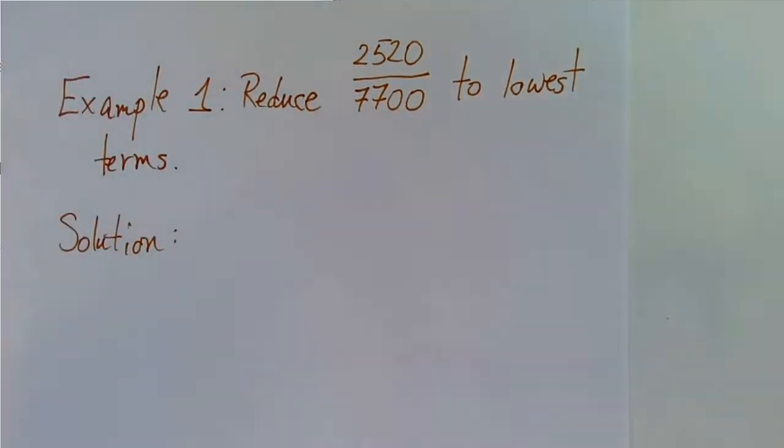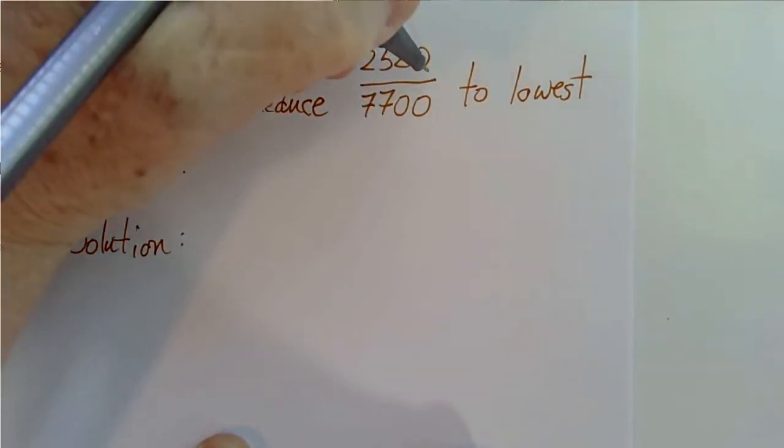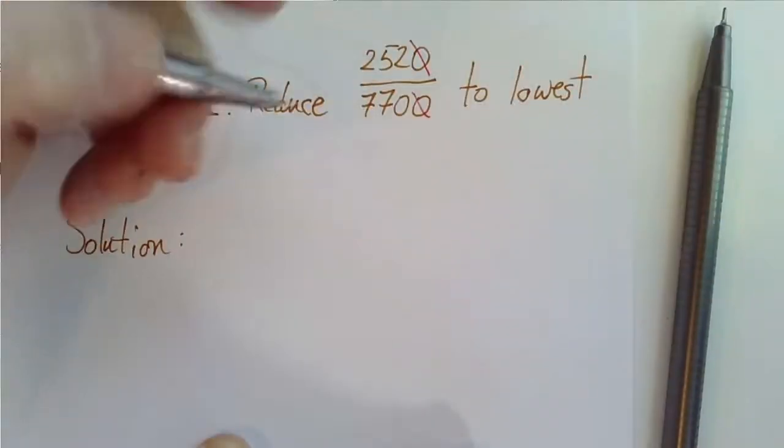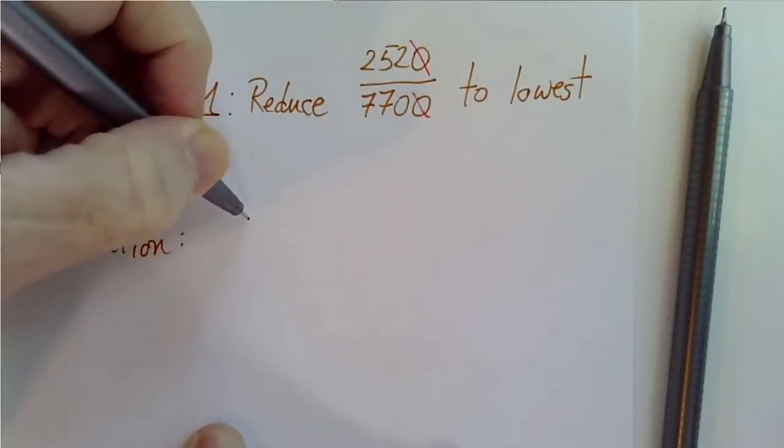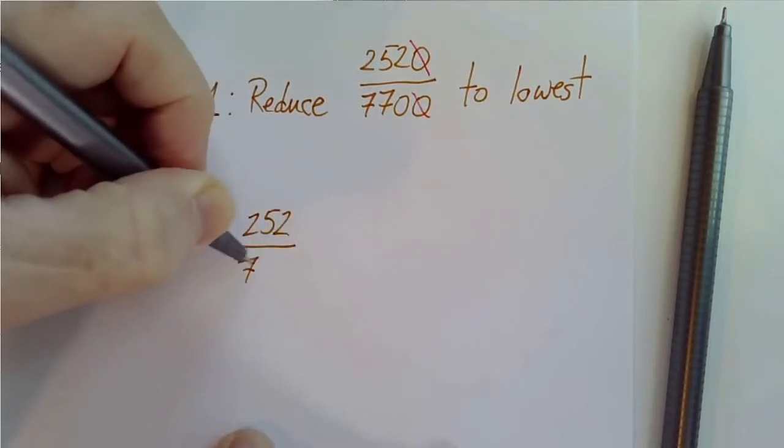Well, the first thing that we see is that both numbers end in a 0. So I can strike off a 0. We get 252 divided by 770.